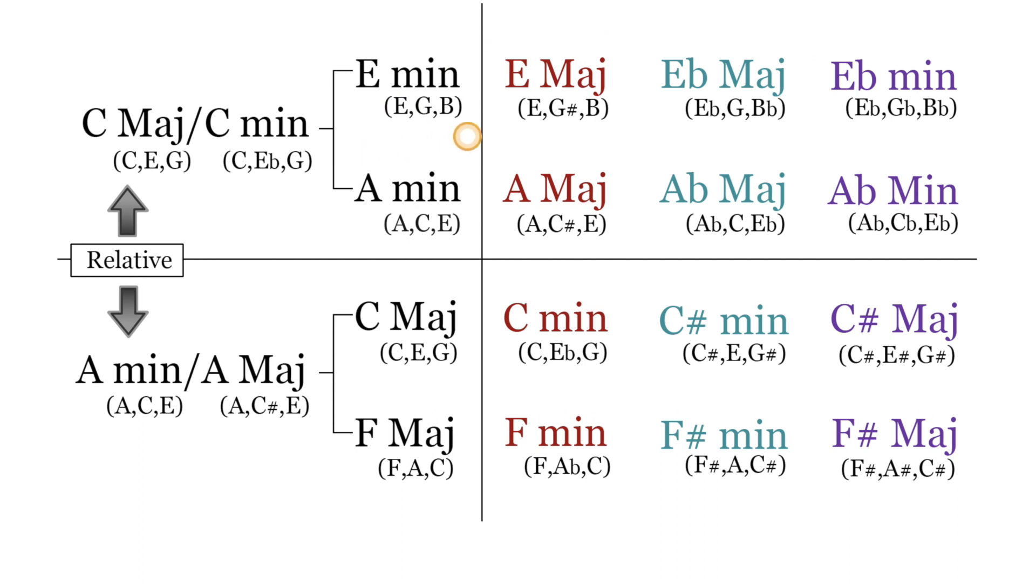And the chromatic submediants would be A minor, A major, and A flat minor. The bottom half of the chart works the same way. If you're in the key of A minor, the diatonic three chord and six chord are C major and F major.